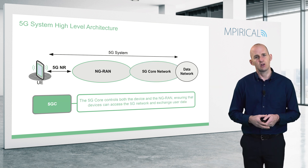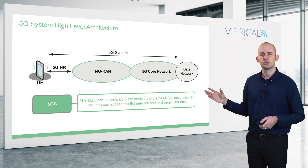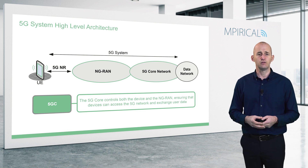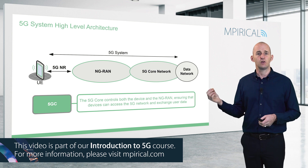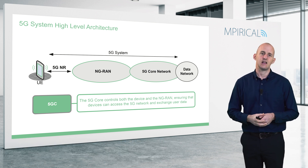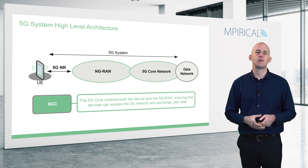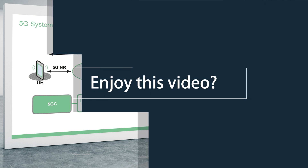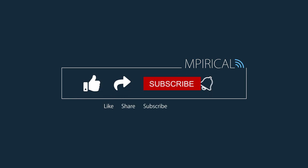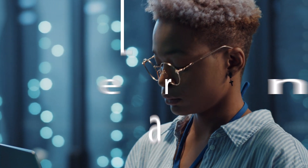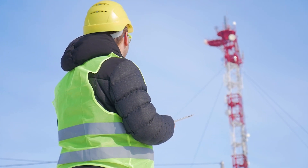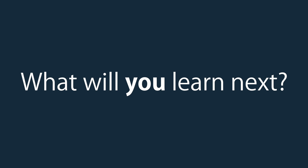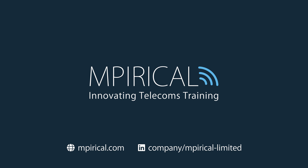Finally, there is the 5G core network, which must also be deployed as part of a standalone deployment. It is based on a cloud infrastructure and provides control to both the device itself and the radio access network. The gNBs found in the radio access network — the New Radio Node Bs — get their control directly from the core network. Hence, they stand alone.